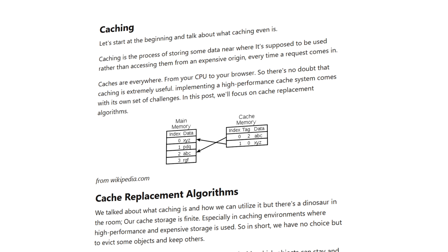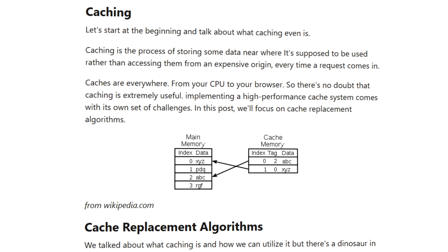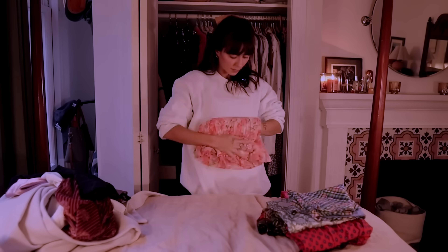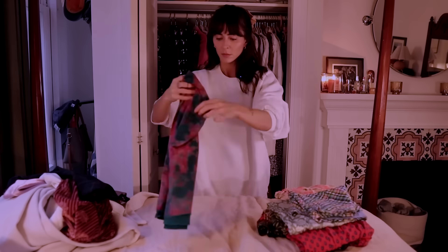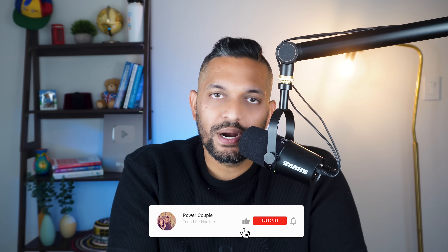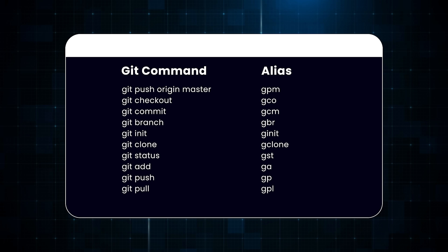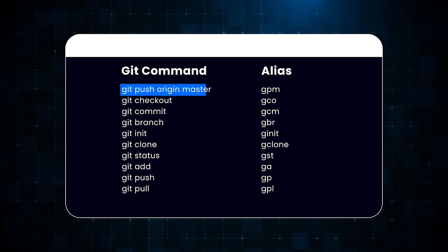Let's talk about caching — storing frequently needed information somewhere you can easily retrieve it. One popular caching algorithm is Least Frequently Used, or LFU. LFU discards the least frequently used items first when the cache gets full, based on the principle that if you haven't used something often in the past, you are less likely to need it soon. As a practical application, write a script to find your most frequently used terminal commands and create aliases for them in your bashrc file. For example, instead of typing git push origin master, you could just type gpm. It's a small change that can significantly improve your productivity over time.